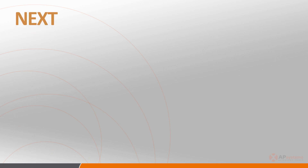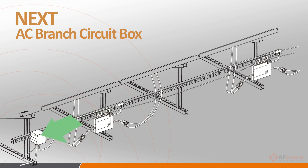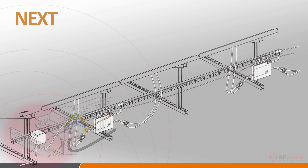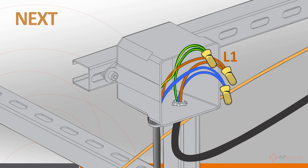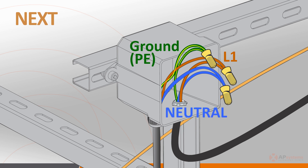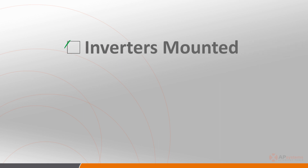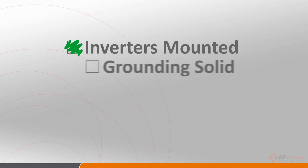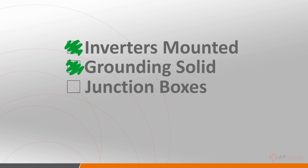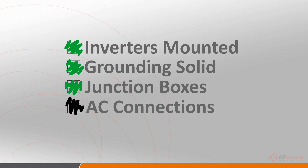The next step involves installing the AC branch circuit junction box in a suitable location, as close to the end of a branch of modules as possible. Make sure to wire the conductors correctly: L1 is brown, ground or protective earth is green and yellow, and neutral is blue. With the inverters mounted, grounding sorted out, and junction boxes installed, it's time to connect the microinverters together on the AC side.